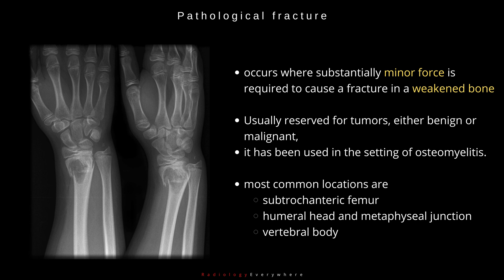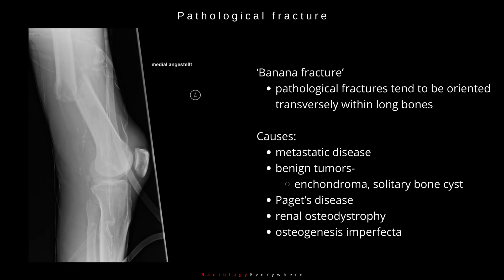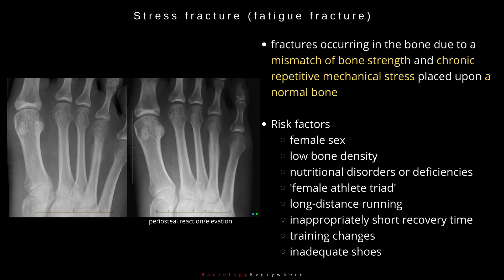In adult patients, avulsion of the femoral lesser trochanter should be considered a pathological fracture until proven otherwise. There is a subcategory called the banana fracture — pathological fractures tend to be oriented transversely within the long bones. Causes include metastatic disease or benign tumors including enchondroma, solitary bone cyst, Paget's disease, renal osteodystrophy, or osteogenesis imperfecta.